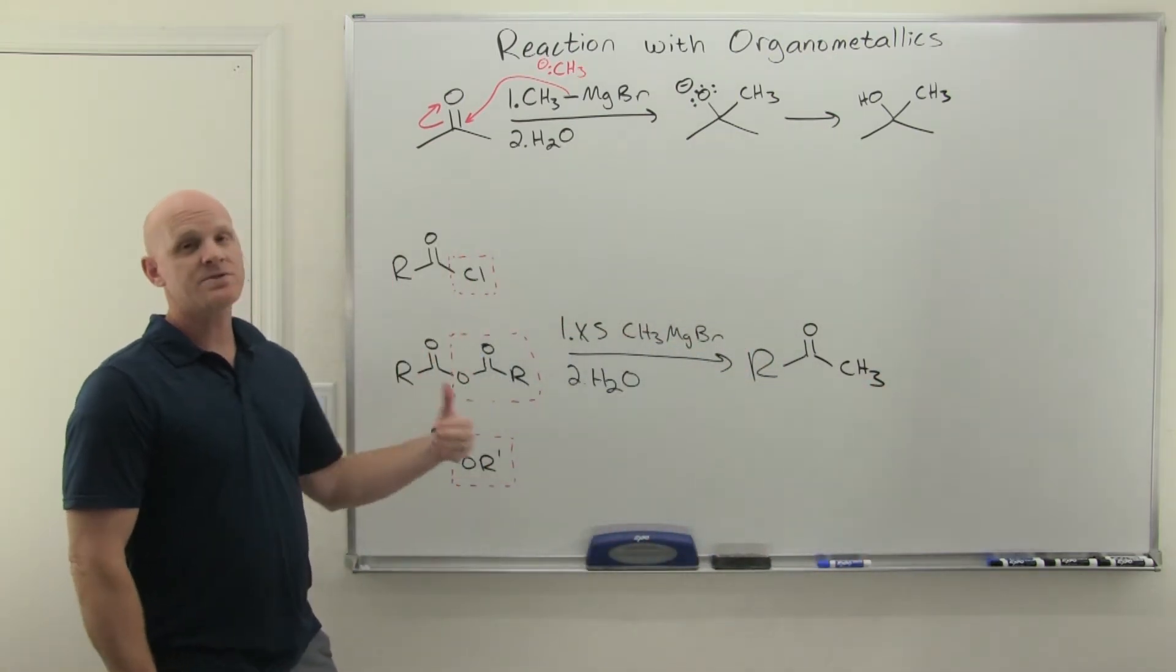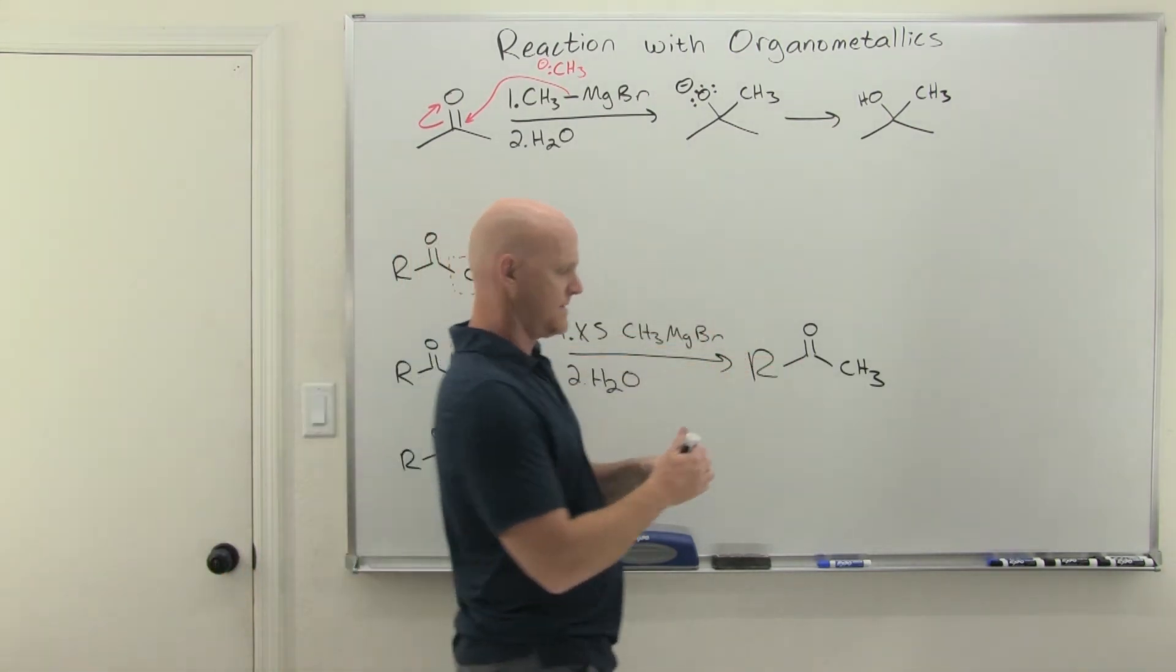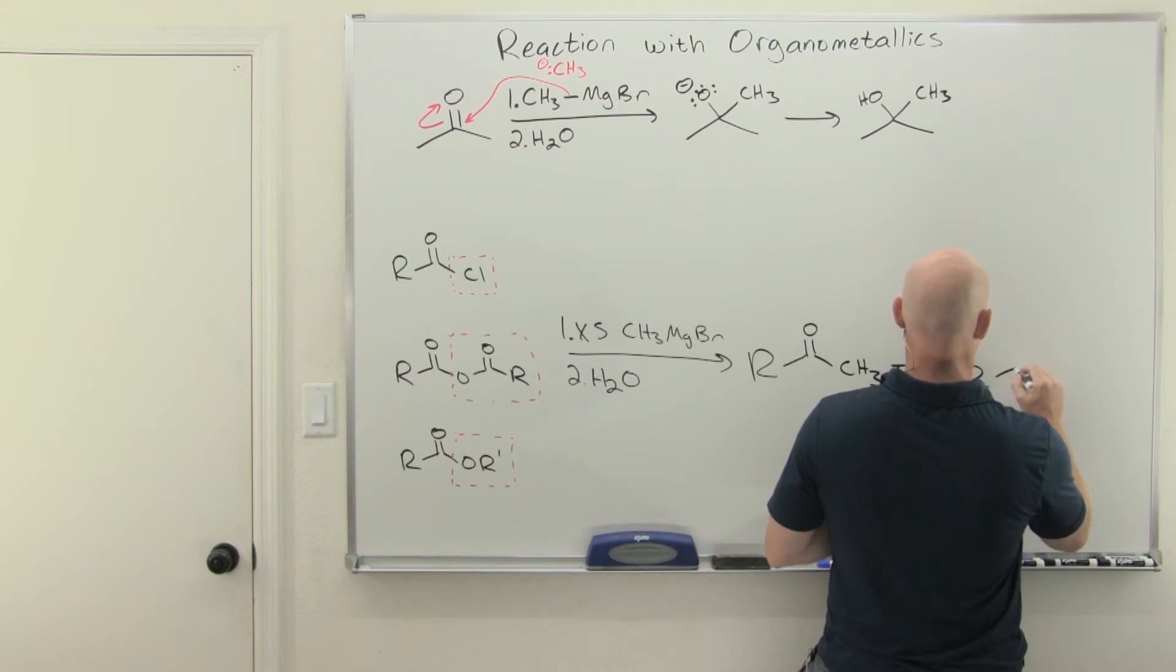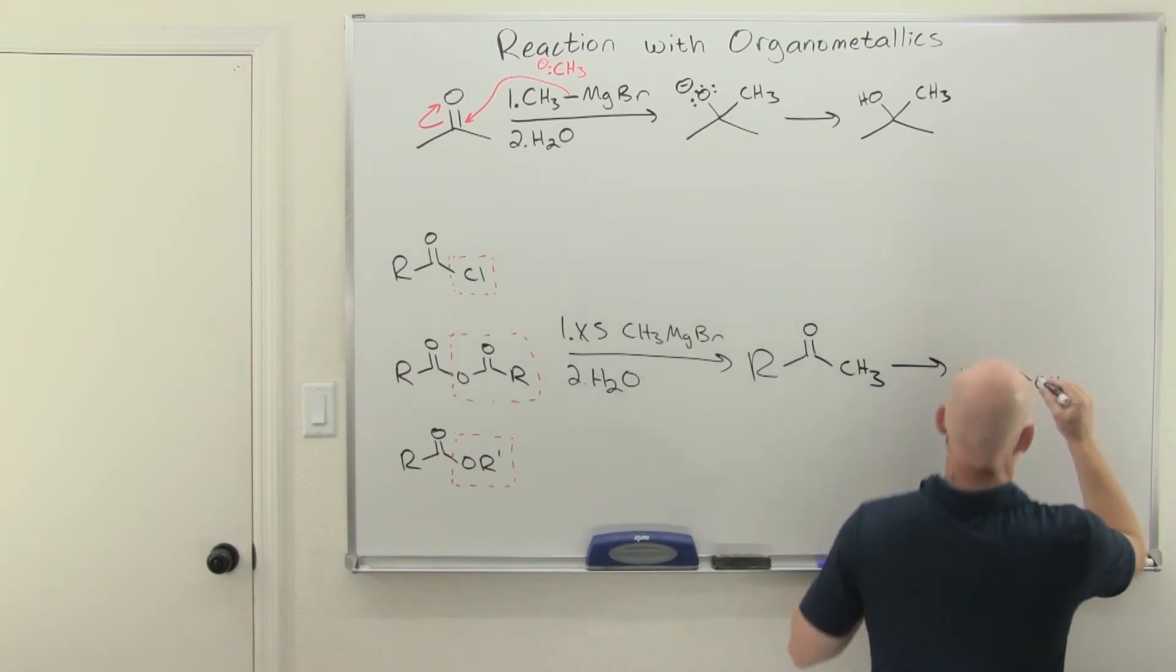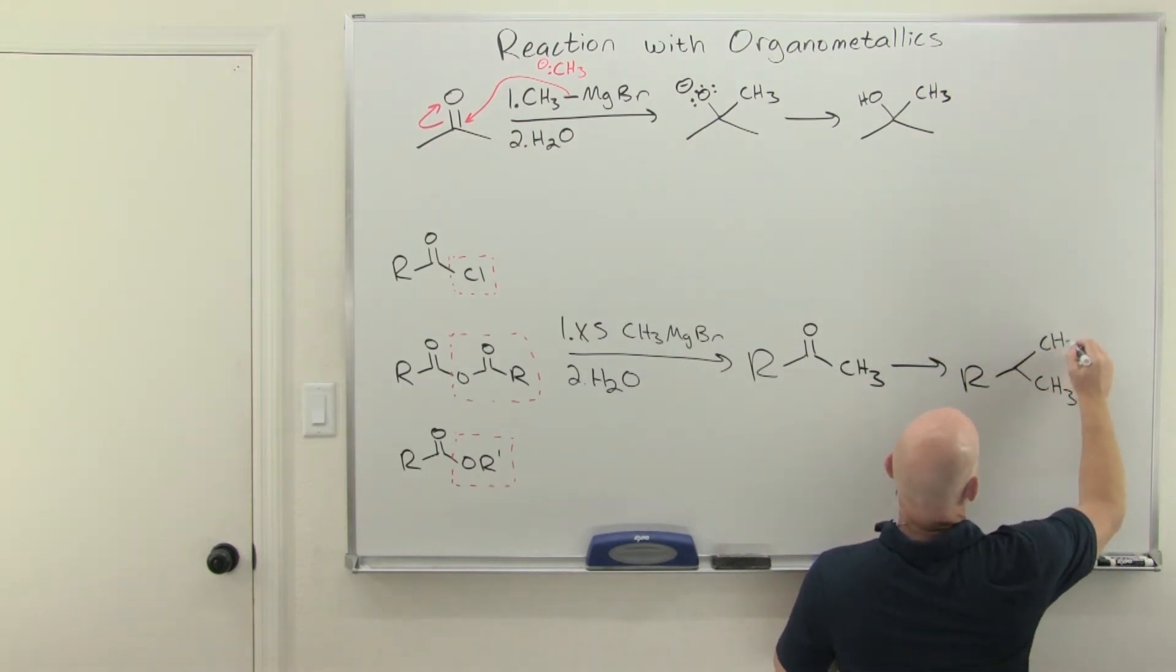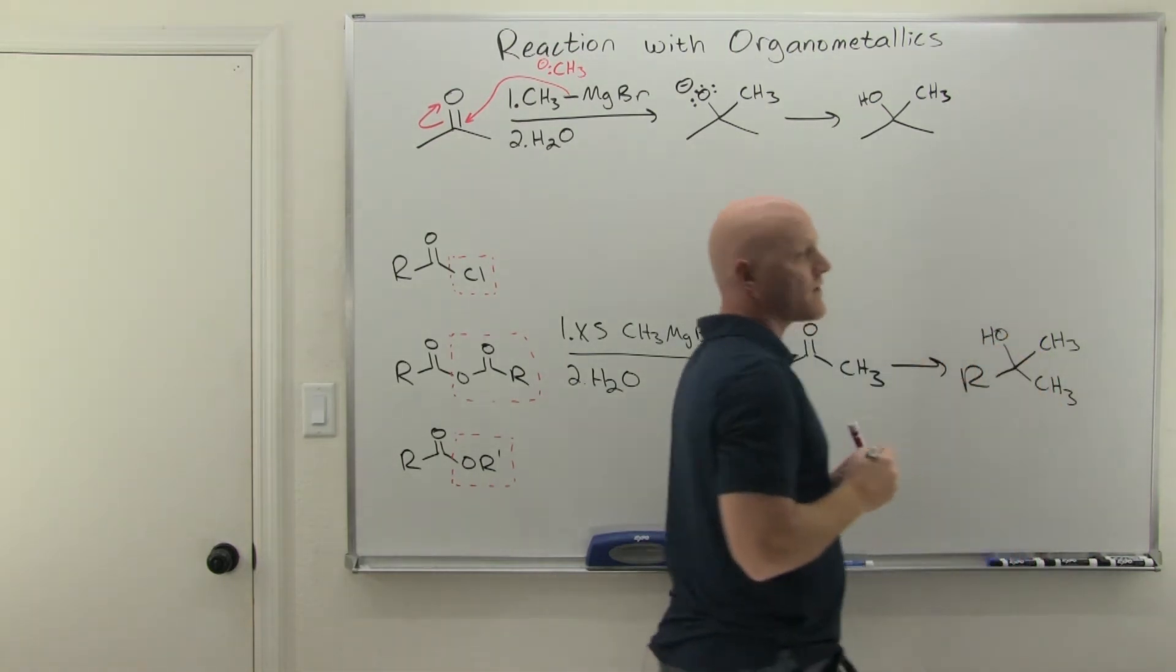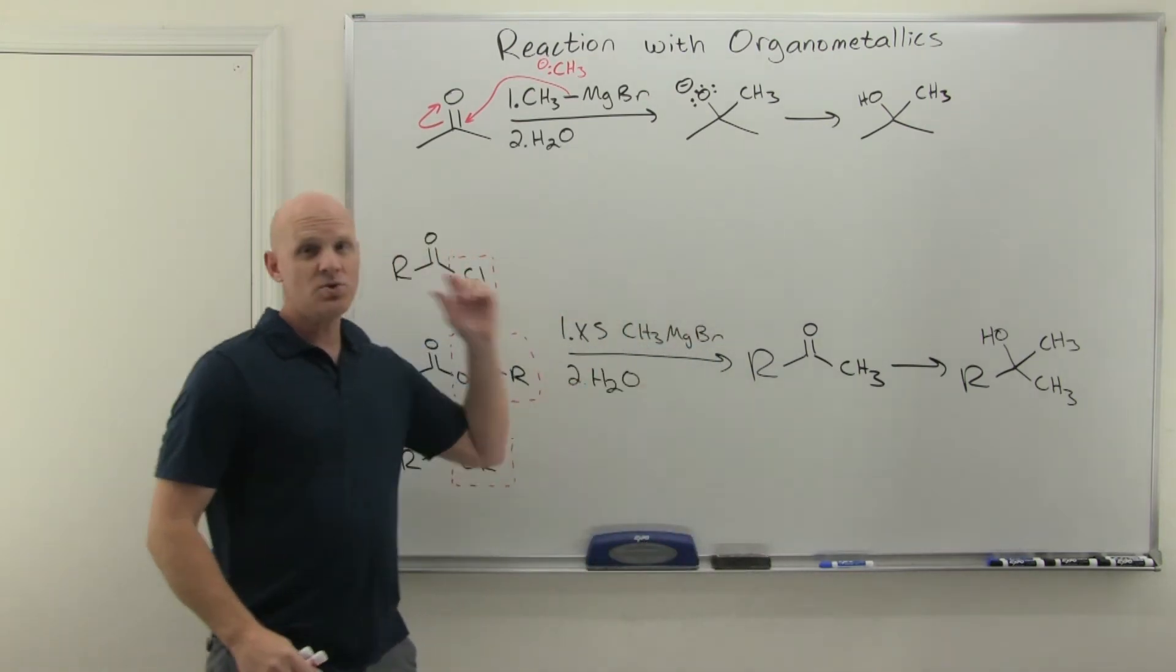But again, we saw that the Grignard reacts with ketones, and so we're going to add, once again here, we'll add a second methyl Grignard in a nucleophilic addition reaction, and then our acid workup step will protonate the oxygen to give us our alcohol. And so that's the key here, we get to add two equivalents.